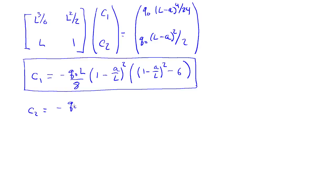And C2, I can also go ahead and factor out the solution for C2. I'll get minus Q naught L squared over 8, 1 minus A over L squared, times 2 minus 1 minus A over L squared. So that gives me C2.